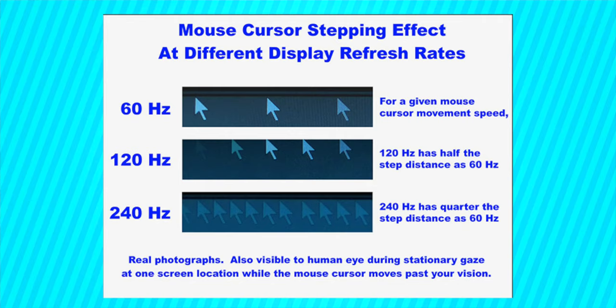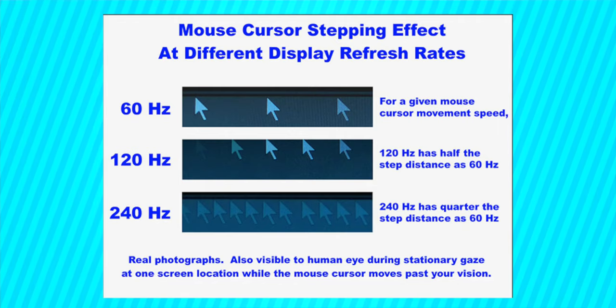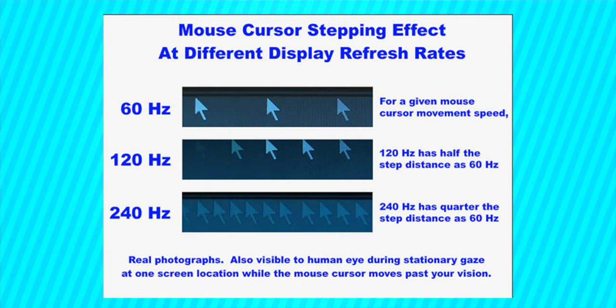Okay guys, first of all, what is the refresh rate? It's very simple. In one second, how many times does your smartphone refresh? That's what refresh rate means. On a normal smartphone, you have a 60 times refresh rate — that's a 60Hz refresh rate.